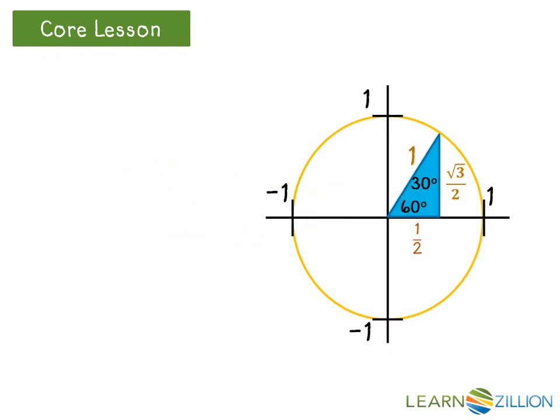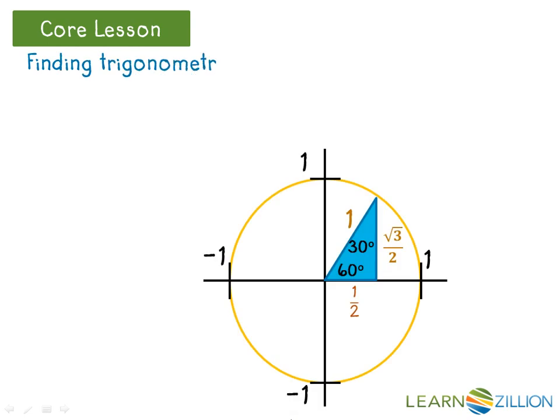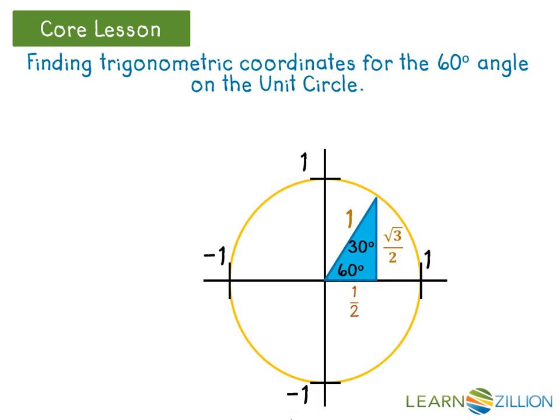Because the hypotenuse of the 30-60-90 triangle is one, like the radius of the unit circle, we can place it inside the unit circle. By tracing the legs of the 30-60-90 triangle from the origin to the point where the triangle touches the circle, we can find the coordinates of the point on the unit circle. In other words, we have to move one-half a unit to the right, and then up by the square root of three over two units to get to the point one-half, square root of three over two.